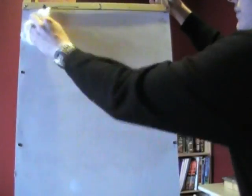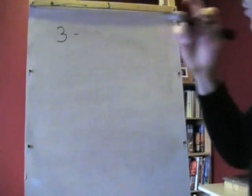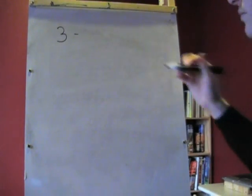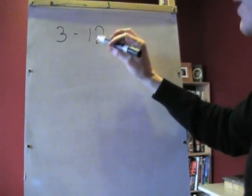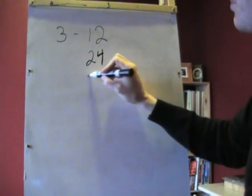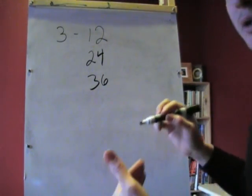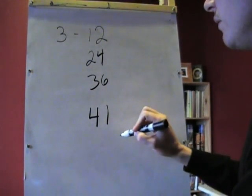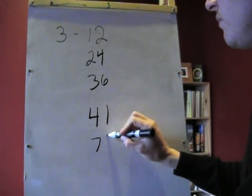The next number on our list is 3. 3 is a little bit more tricky than 2. You can't just pick numbers out, but let's pick a couple numbers that we know are divisible by 3, just to test this: 12, 24, 36, 41, and 70.